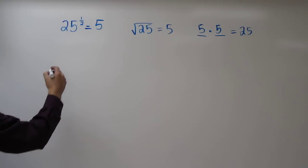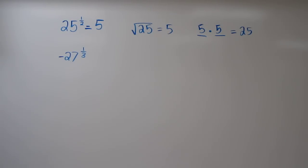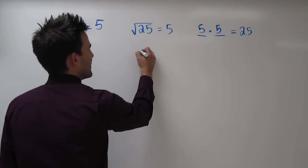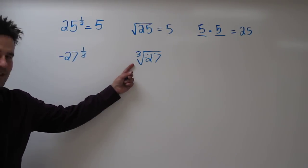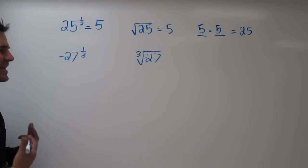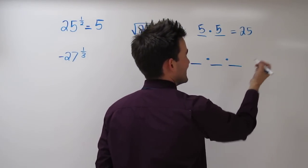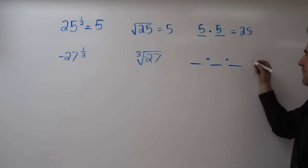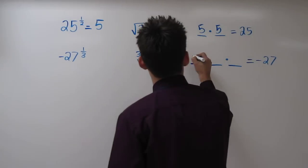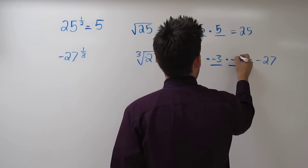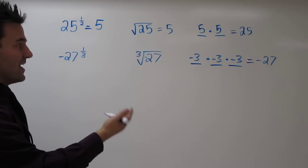Let's try another one. How about negative 27 to the 1 third power? Negative 27 to the 1 third power is actually the same as finding the cube root of negative 27. Because we're dealing with a cube root instead of a square root, we have to think of what cubed would give us negative 27. With a little investigation and guess and check, you could probably come up with negative 3 times negative 3 times negative 3 equals negative 27.